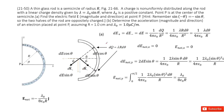We have a thin glass rod in the shape of a semicircle with radius R. The top side carries positive charge and the bottom side carries negative charge. We need to find the electric field at position P.